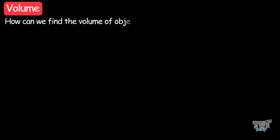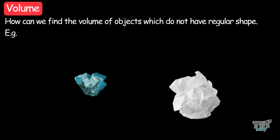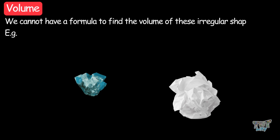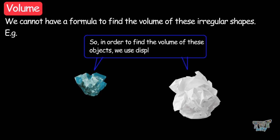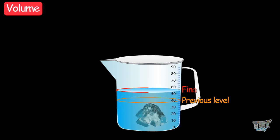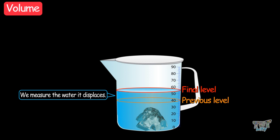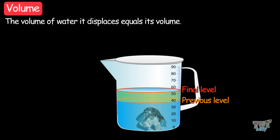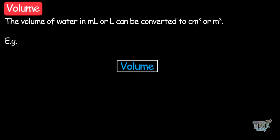But how can we find the volume of objects that do not have a regular shape? We cannot use a formula for irregular shapes. So in order to find the volume of these objects, we use the displacement method. An object with an irregular shape can be dipped in a container filled with water or any other liquid, and then we measure the amount of water it displaces. The volume of water it displaces is equal to its volume. The volume measured in milliliters can then be converted to cubic centimeters — one milliliter equals one cubic centimeter.